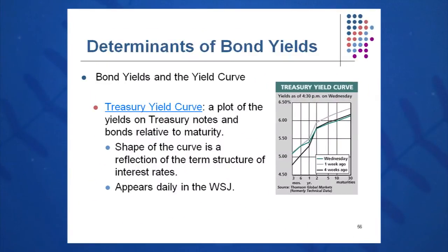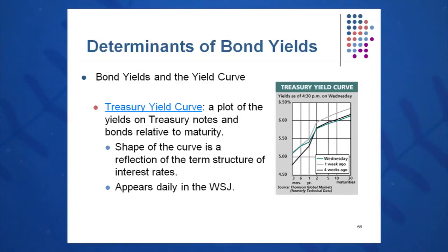This is simulated by the treasury yield curve, which is a plot of yields on treasury notes and bonds relative to maturity. Typically upward sloping — I've seen it a couple of times downward sloping. It appears in the Wall Street Journal on a daily basis, and this reflects the term structure of interest rates. Typically shorter-term rates are lower than longer-term rates because we want payment for those three components reflected in the term structure.